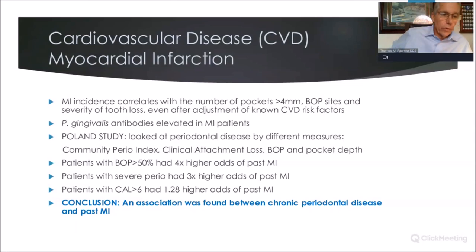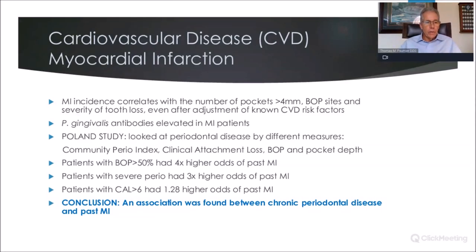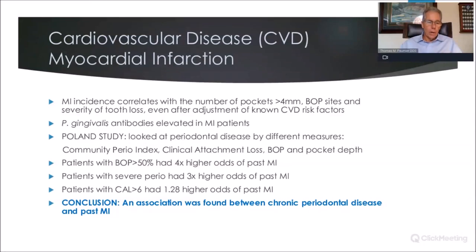From atherosclerosis to actual myocardial infarction — a study done in Poland found that MI incidence correlates with the number of pockets greater than 4mm, bleeding on probing sites, and severity of tooth loss, even after adjusting for all known cardiovascular risk factors, and that P. gingivalis antibodies are elevated in patients who had heart attacks. Patients with bleeding on probing greater than 50% had four times higher odds of a past heart attack. Patients with severe periodontal disease had three times higher odds. Patients with clinical attachment loss greater than 6mm had only a 20% higher odds — and think about it: attachment loss can exist without active inflammation, such as in a perfectly healthy scenario with recession but shallow pockets.